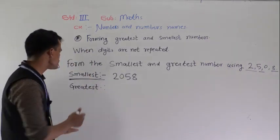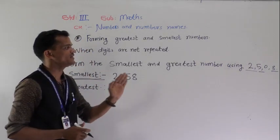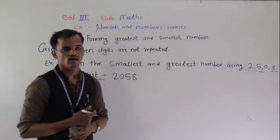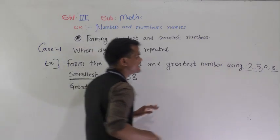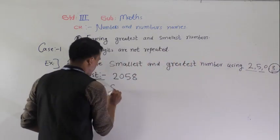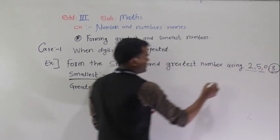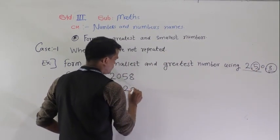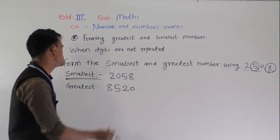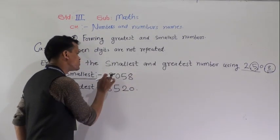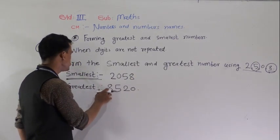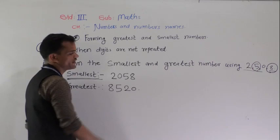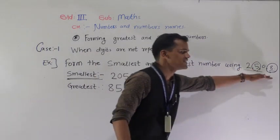Remember this rule. For the greatest number, arrange the given digits into descending order — big to small order. Which is the biggest digit here? 8. So place 8 at the first position, then 5, then 2, then 0. This is the greatest number — 8520 — formed by using these digits.